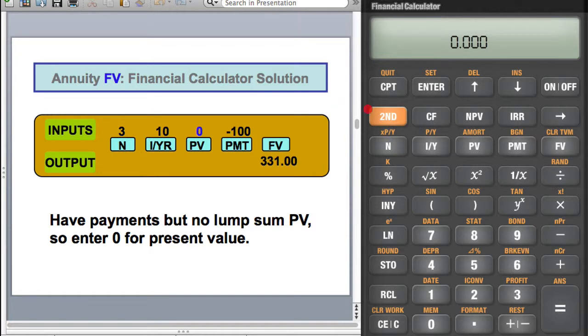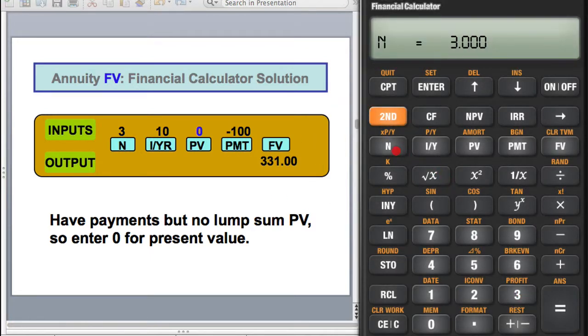Here's a setup for that. Number of time period is 3, N equals 3. Interest per year is 10%.